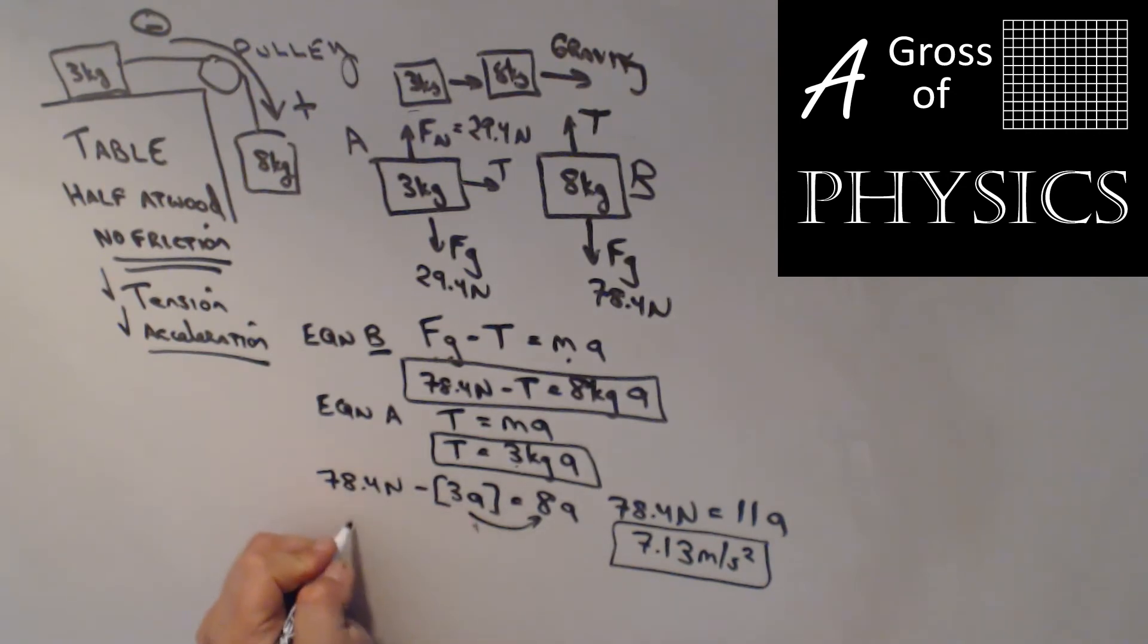To find the tension, it's 3 times 7.13. This is kilograms, this is meters per second squared. When I multiply that, you should end up with the tension of 21.4 N. The acceleration was 7.13 - it has to be between 0 and 9.8 because there's no other external forces acting on it. Gravity is as big as it could have been, and tension becomes 21.4 N.